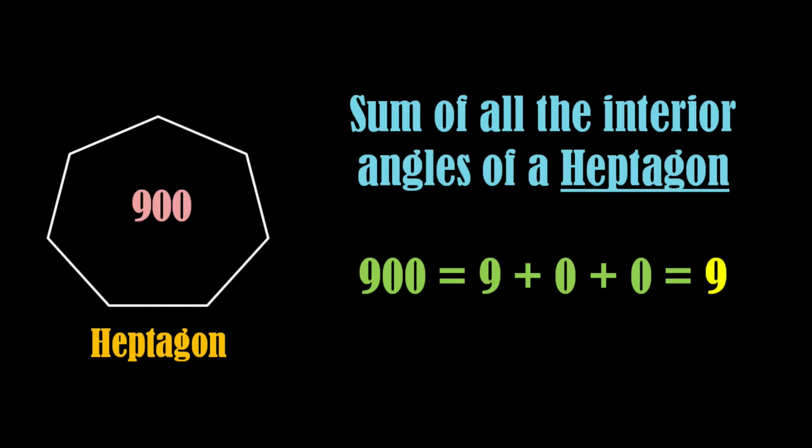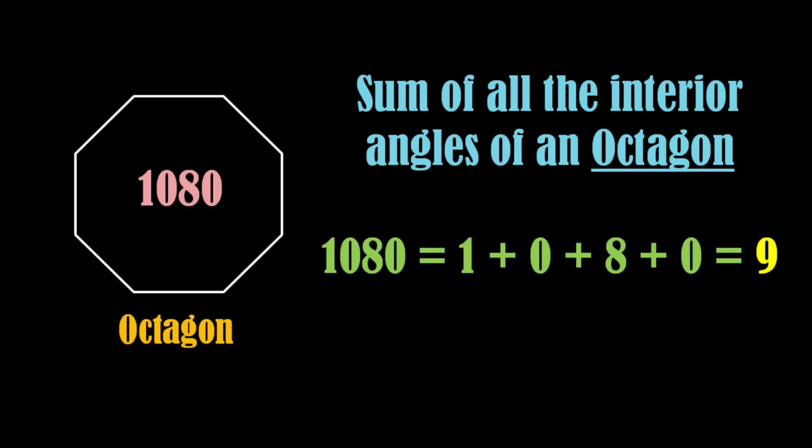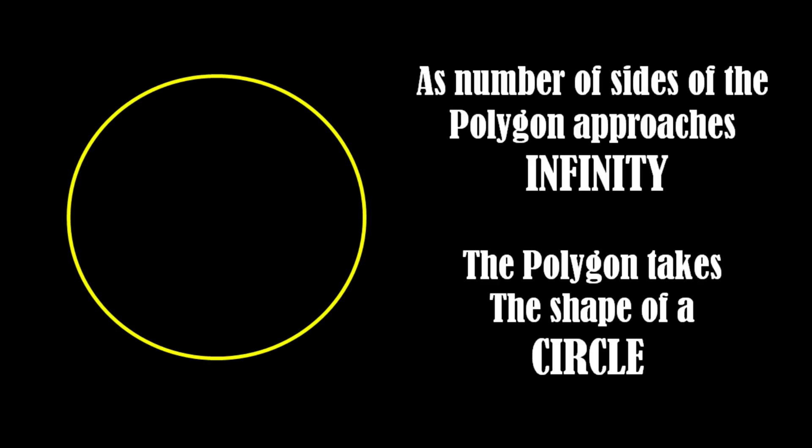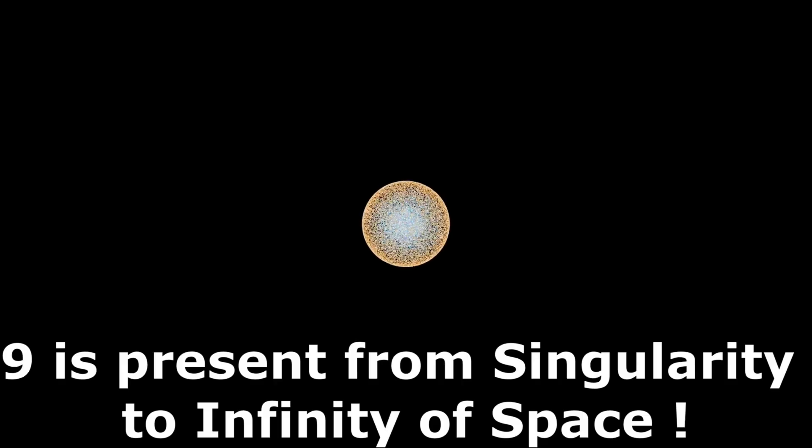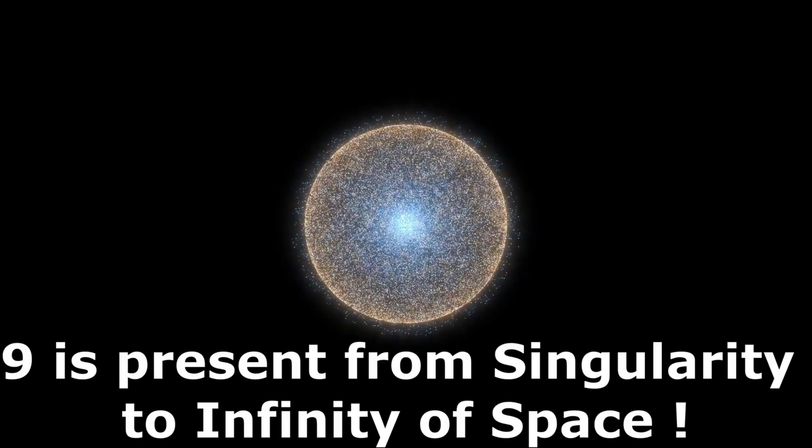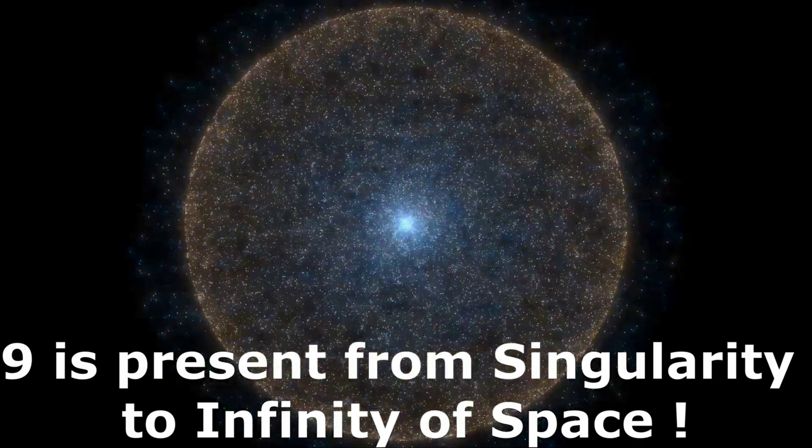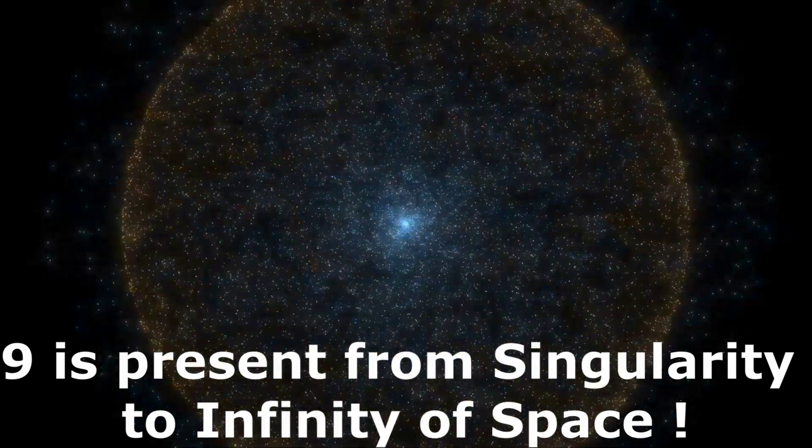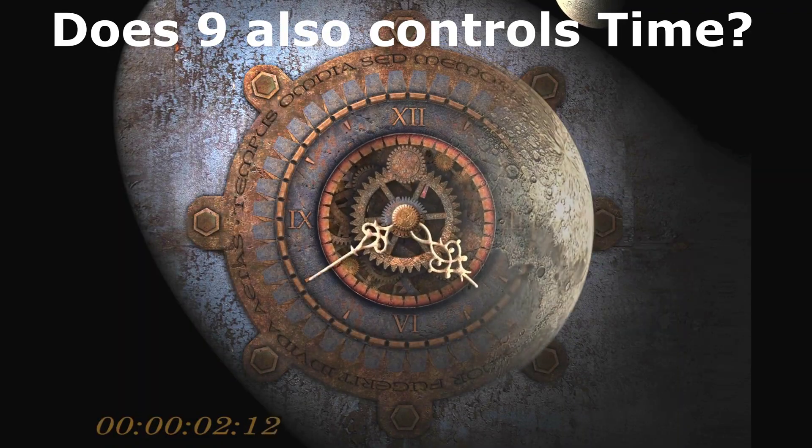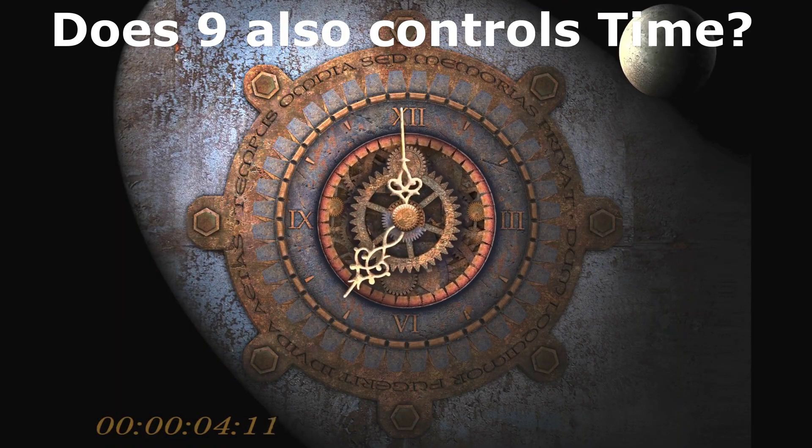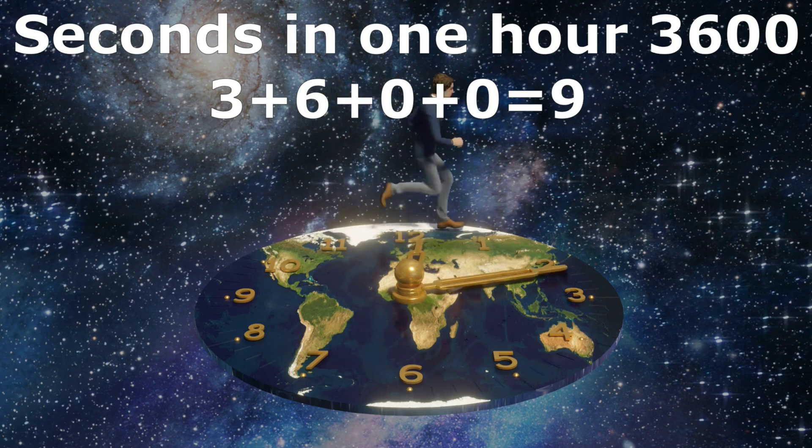As the polygon's number of sides approaches infinity, it transforms into a circle. Since nine appeared in all the polygons, it implies that nine accompanies space all the way to infinity. Consequently, it becomes evident that the number nine exists from the singularity of space to the infinity of space. Does number nine also control time? Have a look at this.